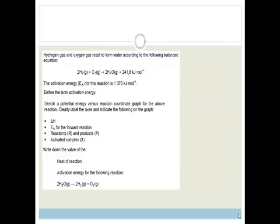It says hydrogen gas and oxygen gas react to form water according to the following balanced equation: 2H2(g) + O2(g) → 2H2O(l) + 241.8 kJ/mol². The activation energy for this reaction is 1370 kilojoules per mole. Define the term activation energy. The activation energy is the minimum energy required for this reaction to occur.